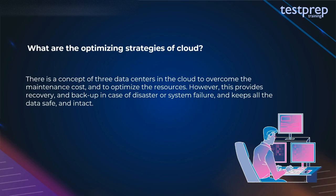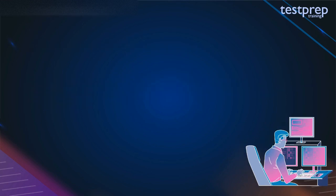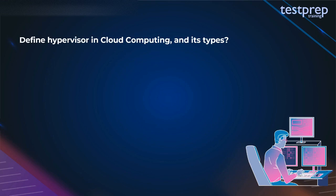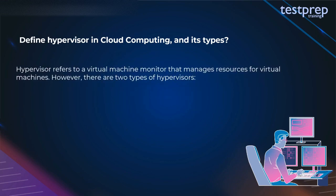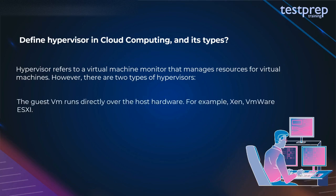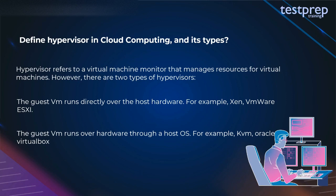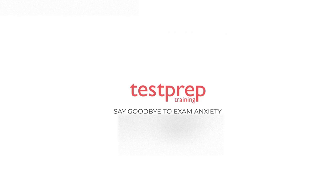Question 49: What are the optimizing strategies of cloud? There is a concept of three data centers in the cloud to overcome maintenance costs and optimize resources. This provides recovery and backup in case of disaster or system failure, keeping all data safe. Question 50: Define hypervisor in cloud computing and its types. A hypervisor is a virtual machine monitor that manages resources for virtual machines. There are two types: first, the guest VM runs directly over the host hardware (e.g., Xen, VMware ESX); second, the guest VM runs over hardware through a host OS (e.g., KVM, Oracle VirtualBox).